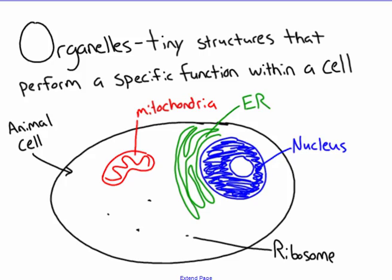When you think of the word organ, some organs you think of right away might be liver, brain, heart. These are all bigger organs made up of a lot of cells to perform a specific function — that's what organs are defined by, is their function. Organelles — the ending '-elle' just means tiny. So these are just tiny organs found within cells, designed to perform a specific function.